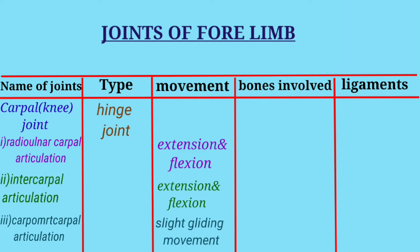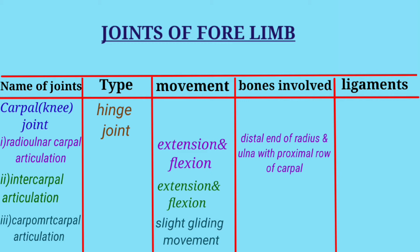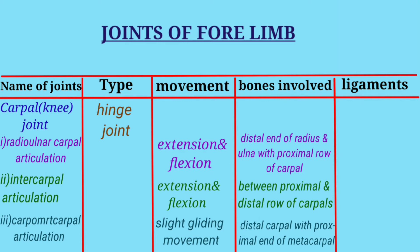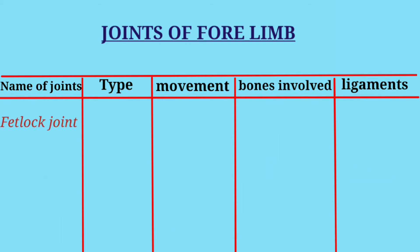Bones involved in radio-ulnar carpal articulation are the distal end of the radius and ulna with the proximal row of carpals. In intercarpal articulation, bones involved are between the proximal and distal row of carpals. In carpometacarpal articulation, bones involved are the distal carpals with the proximal end of the metacarpals. Ligaments in all three are the capsular ligament, medial ligament, and lateral ligament.